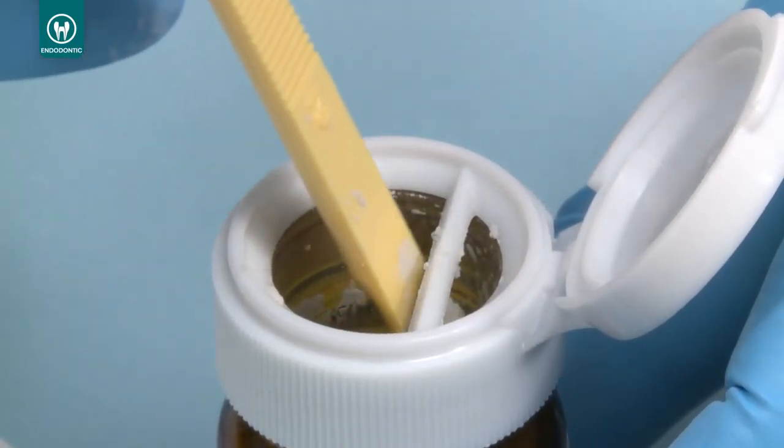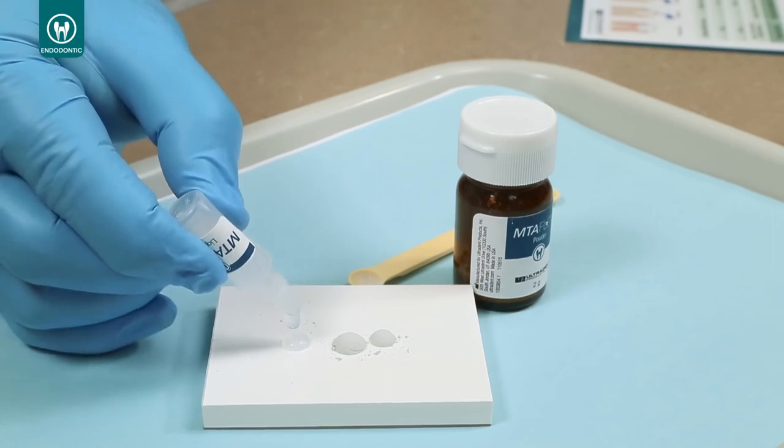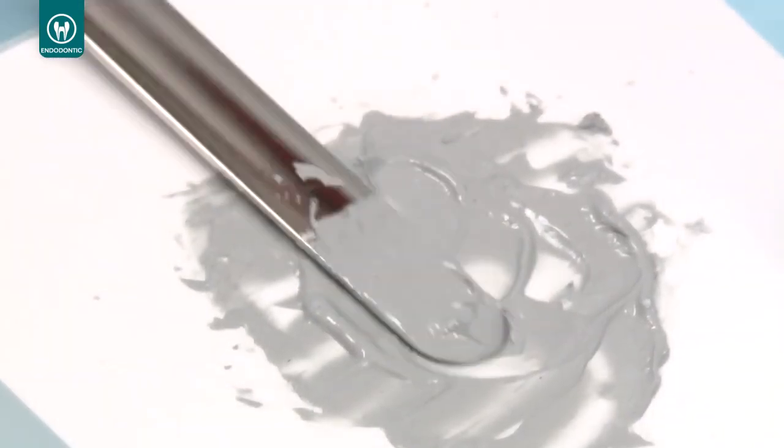Using MTA Flow is easy. Simply measure the appropriate amount of MTA powder and gel needed depending on the procedure. Mix to a smooth consistency.